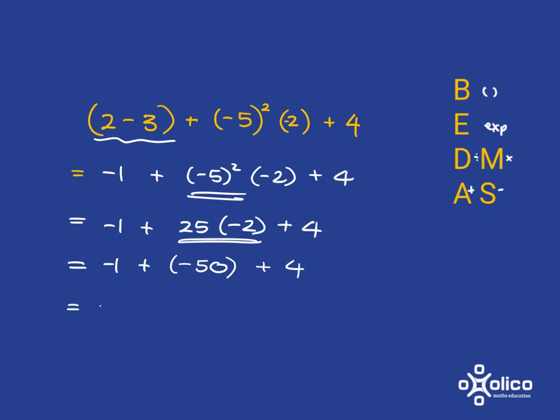Okay, and so what do I have? I'm adding a negative, so it's just subtracting. And now all I have is addition and subtraction, so I simply work from left to right. So negative 1 subtract 50—that's negative 1 going even further down, so it's going to be negative 51. But then coming back up 4 steps, so it's going to be negative 47.